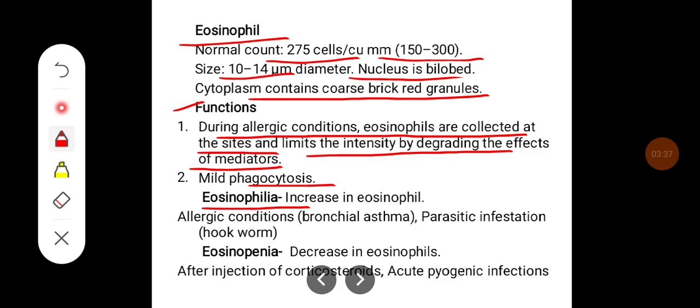Eosinophilia is a condition where there is increased eosinophil count. It can occur in allergic conditions like bronchial asthma, parasitic infestation like hookworm. Eosinopenia is a decrease in the eosinophil count. It can happen after the injection of corticosteroids and acute pyogenic infections.